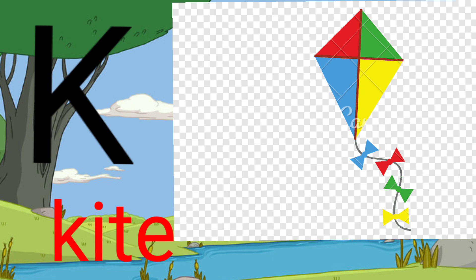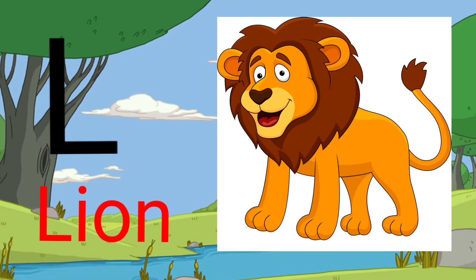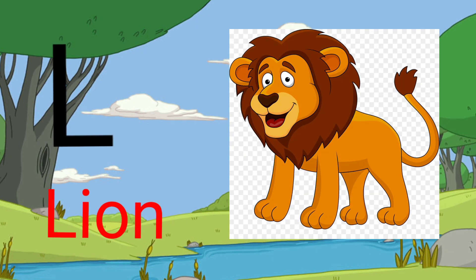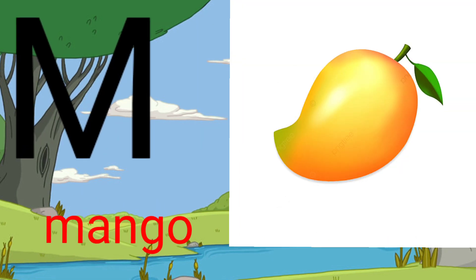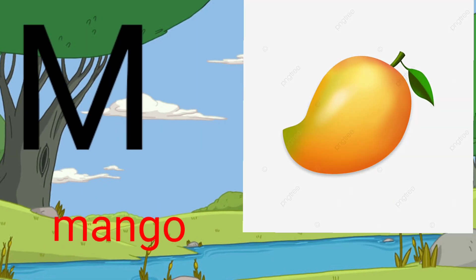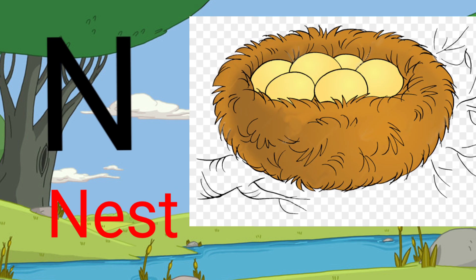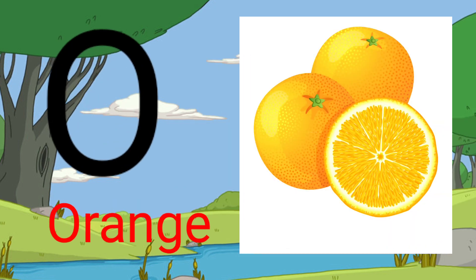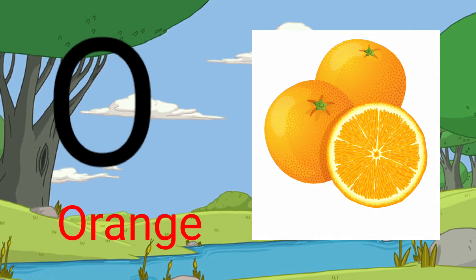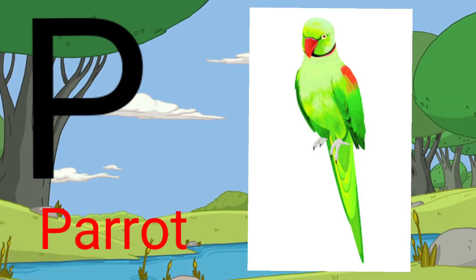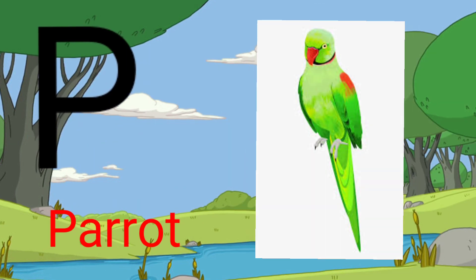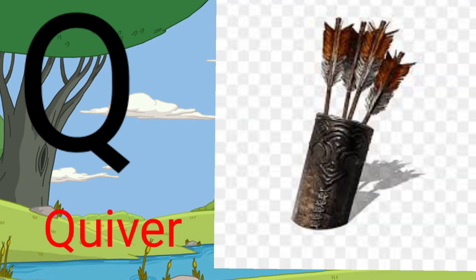K for cow, L for lion, M for mango, N for nest, O for orange, B for parrot.